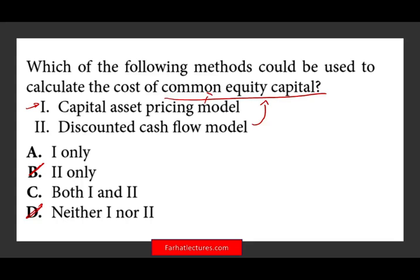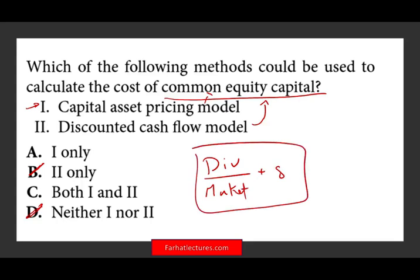Yes, discounted cash flow works here too. Think about what equity does — equity pays dividends. You can take the percentage dividend divided by the market price, plus add some growth rate, and use this discounted cash flow formula to find out how much equity is costing you, since you have to pay investors dividends. So both CAPM and the DCF model can be used to estimate your cost of equity — and this is important for something called the WACC, the weighted average cost of capital.